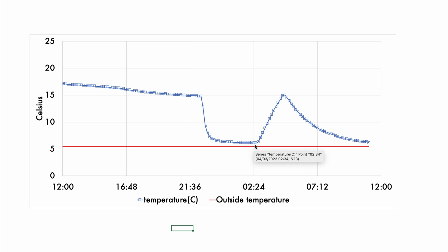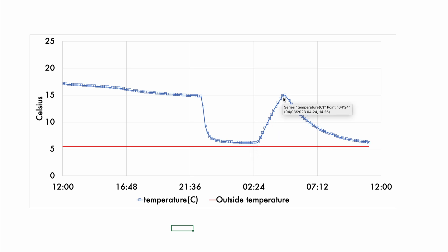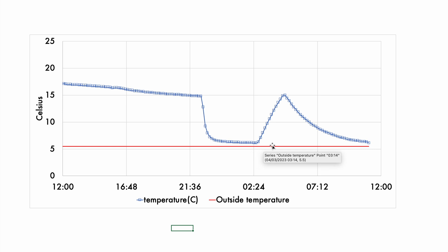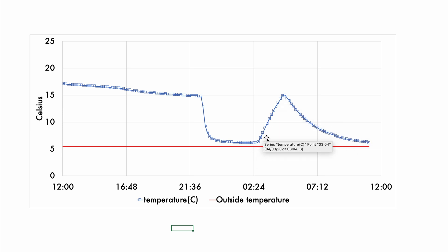At 2:30 in the morning, during off-peak hours, we switch on the electric radiator and measure how much energy we've used to get to the peak temperature and then back down.